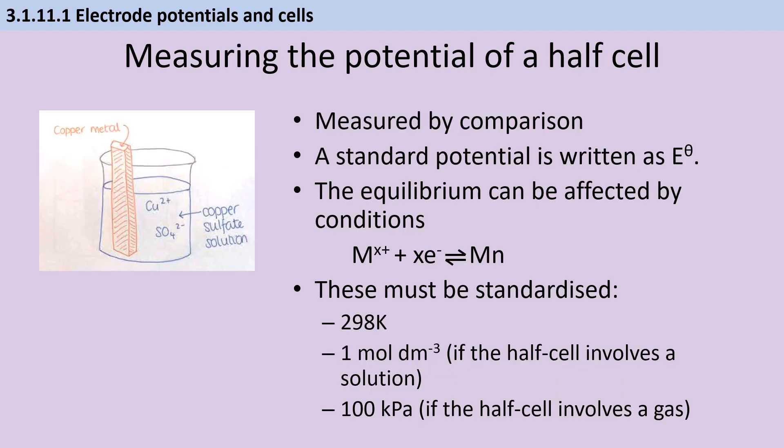When deducing the potential of a half-cell, we need to compare it to something, and this could either be the standard hydrogen electrode or another half-cell that we already know the potential of. Fundamentally, we're looking at an equilibrium, so the conditions need to be standardised, otherwise this would affect the position of equilibrium. We usually think in terms of 298 Kelvin, and if the half-cell involves a solution, that solution should have a concentration of 1 mole per decimetre cubed, and if gases are involved, then 100 kilopascals.